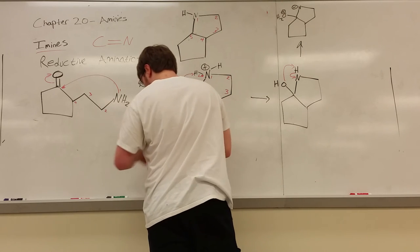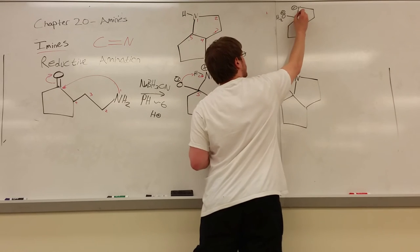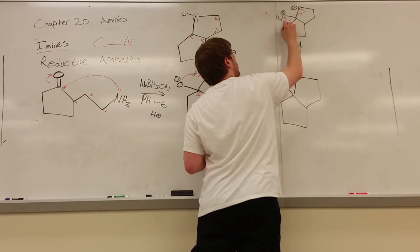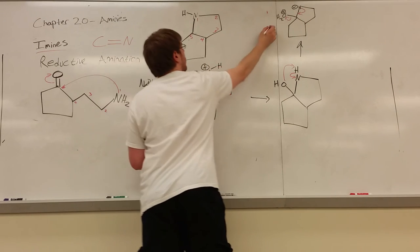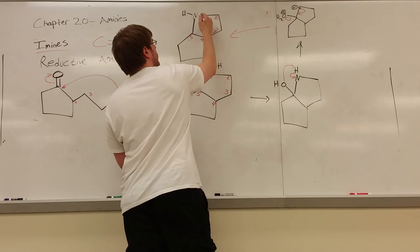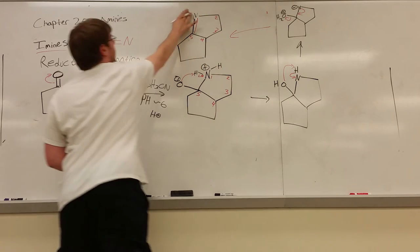So now finally, to form that double bond and kick the water out, the nitrogen's electrons swing down, and the water group leaves, giving you the final product. Well, almost the final product, right? We have the double bond there.